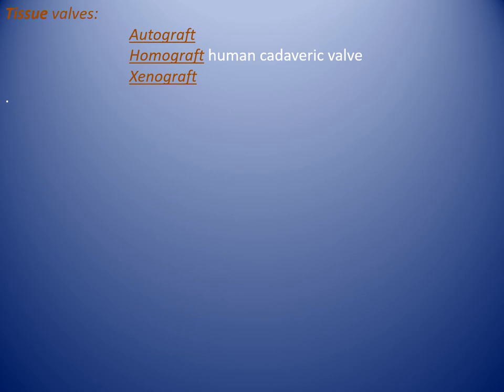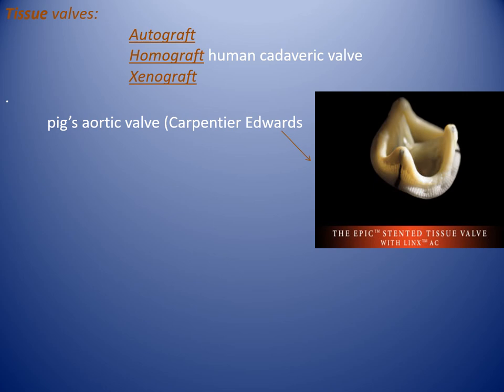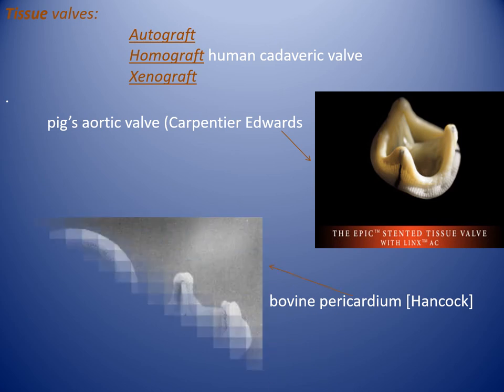Tissue valves: autograft, homograft, or xenograft. Xenografts include the pig aortic valve (Carpentier-Edwards) and bovine pericardium (Hancock).